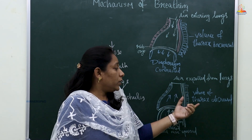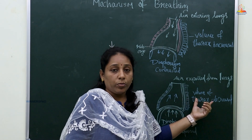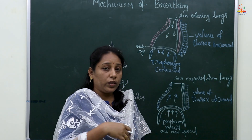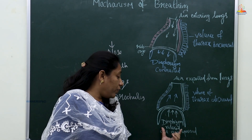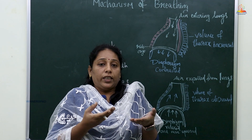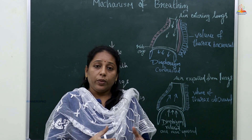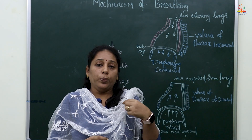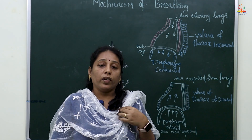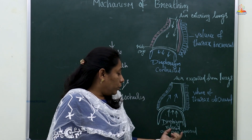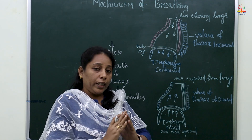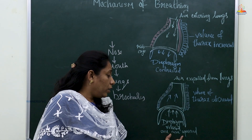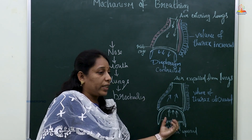During expiration, the volume of the thoracic cavity decreases and the air is expelled. The diaphragm relaxes during exhalation. The diaphragm moves in a dome shape — it contracts during inhalation and relaxes during exhalation. Doctors use this movement to check if airflow is correct and whether there are any blockages. The diaphragm moves upward when relaxed.